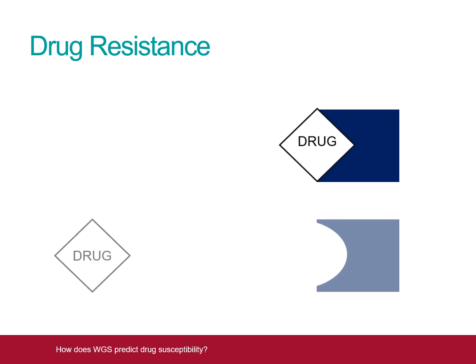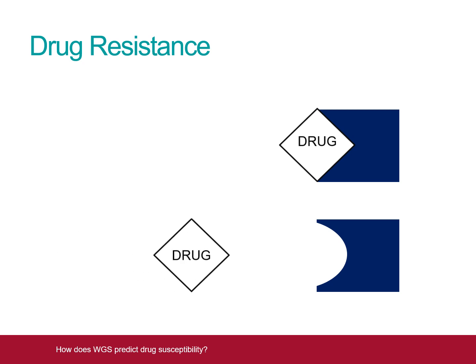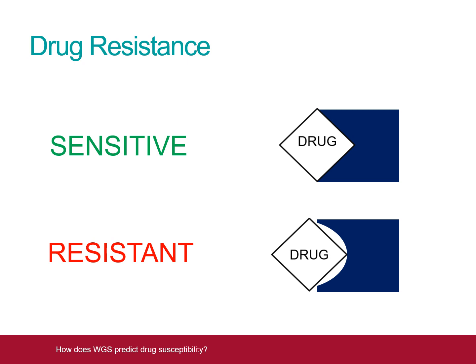Drugs kill TB by interacting with these proteins in a variety of different ways. Therefore, any change in the structure of the protein may stop the drug from working effectively. When this happens, the strain of TB may become resistant to the drug.